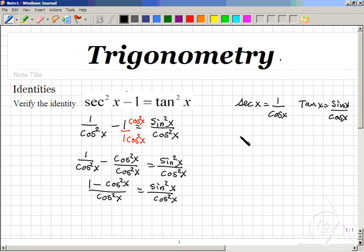Well certainly, we know that 1 minus cosine squared x equals sine squared x. Therefore, sine squared x over cosine squared x equals sine squared x over cosine squared x. Since both expressions are the same, this is a true identity.